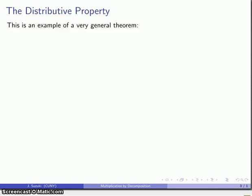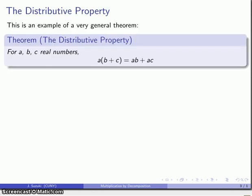This is actually an example of a really general theorem which is known as the distributive property. In general, if I have a bunch of real numbers a, b, and c, then the product a times the sum of b and c is just a times b plus a times c.